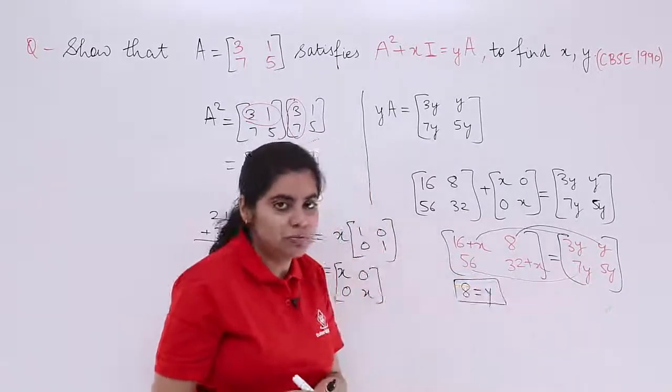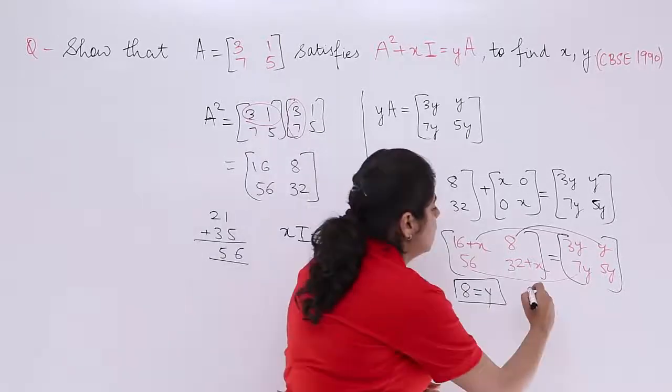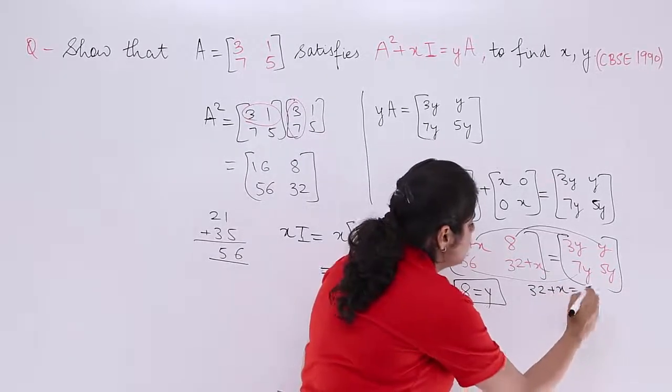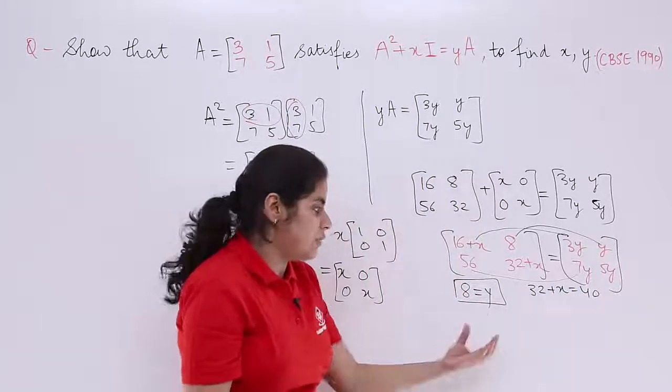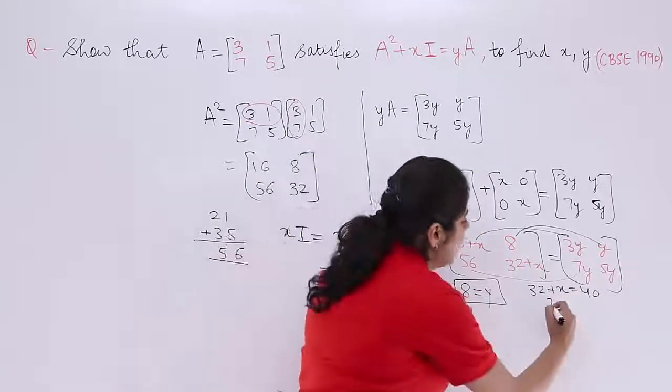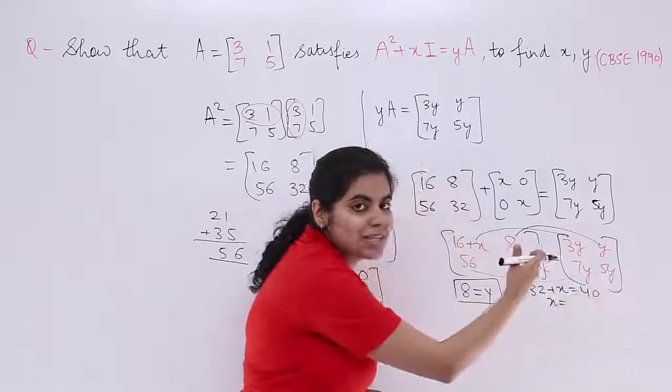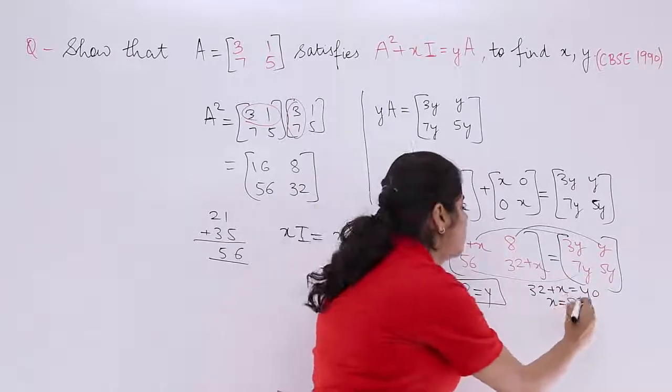Next, 32 plus X is equal to 5Y. Just put the value. 32 plus X is equal to 5Y. 5 times 8 is 40. Right? 5 into Y. Y is 8. Now simply X is equal to what? 40 minus 32. 40 minus 32 is what? It is 8.